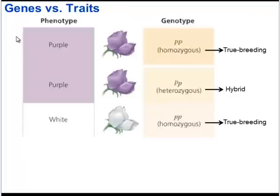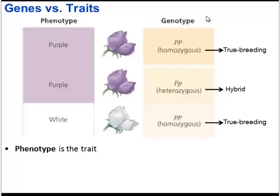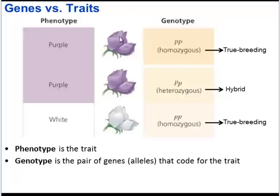There's a big difference between the genes an organism has and the traits that are expressed as observable physical characteristics. A word that means trait is phenotype — for example, purple flower or white flower. The genes that determine that trait are known as the genotype. In order to have the phenotype of purple, a flower could have two different genotypes: two dominant P alleles (homozygous dominant), or one dominant and one recessive P allele (heterozygous, or hybrid). For the white phenotype, the genotype needs to be two recessive lowercase P alleles, which is homozygous recessive.